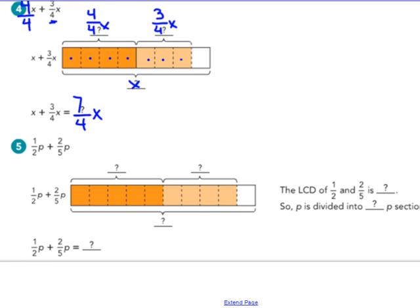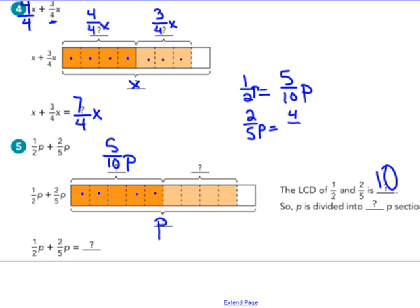Number five: one-half p plus two-fifths p. The common denominator, the least common denominator of one-half and two-fifths, is 10. So my p, my bar, is divided into 10 equal sections. Now let's figure out what sections go with one-half. One-half p is the same thing as five-tenths p, making it an equal fraction. So 1, 2, 3, 4, 5—this represents my five out of 10 parts that are dark orange.